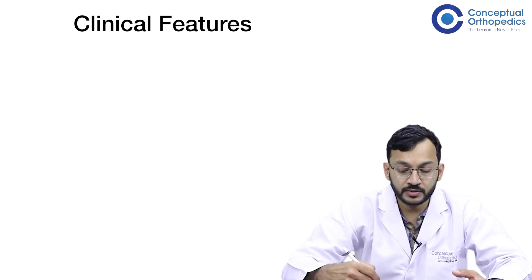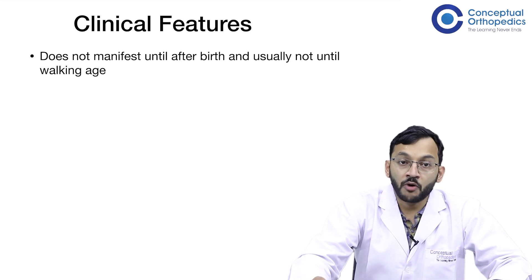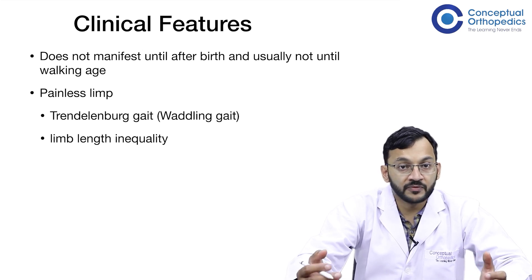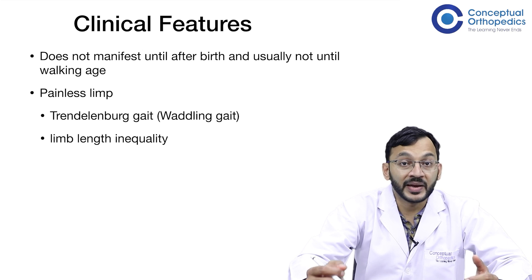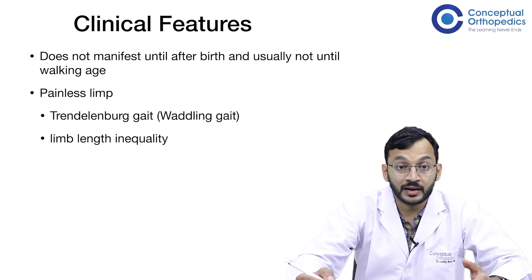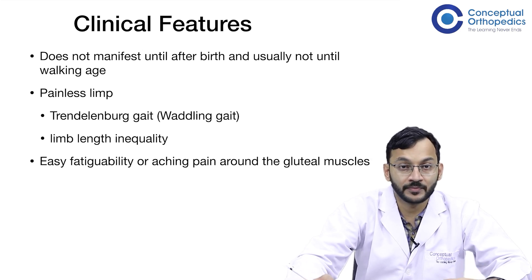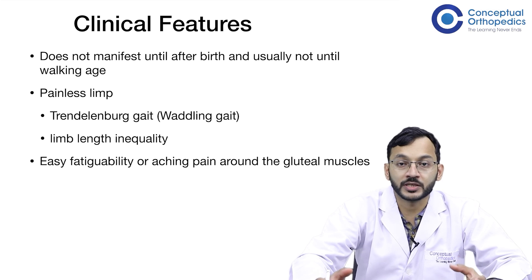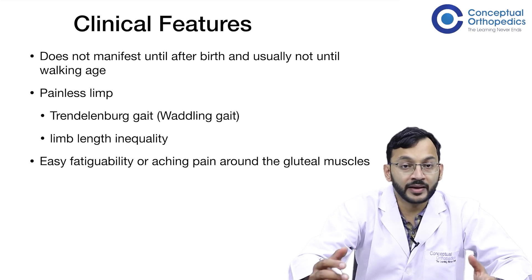The clinical features often do not manifest until after birth, and usually not until the walking age. The most common presenting feature is a painless limp. This is often a Trendelenburg gait, and in bilateral conditions, a waddling gait can be seen. As the child grows, limb length inequality can also be seen. Because of this Trendelenburg lurch and leg length inequality, there is easy fatigability and pain around the gluteal muscles, so children often find it difficult to keep up with their peers.